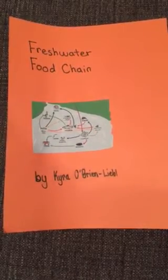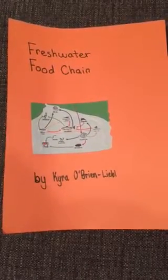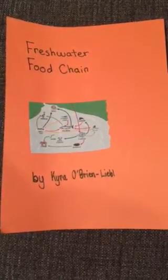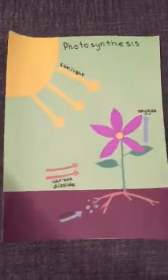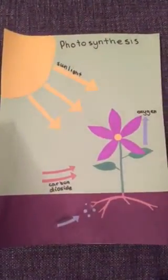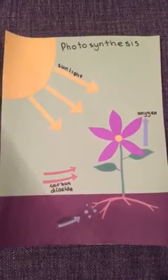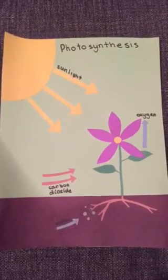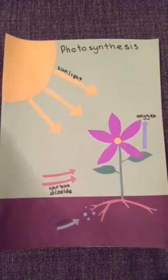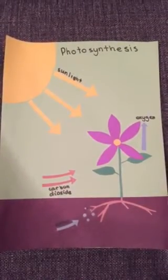Hello, my name is Kira, and this is my tutorial on a freshwater food chain. We begin with the sun, which is part of photosynthesis, a process in which plants produce food, which is why they are called producers.